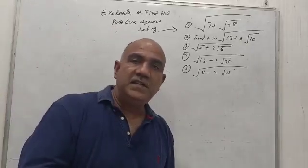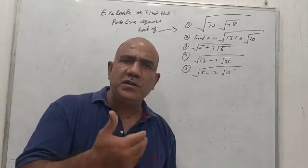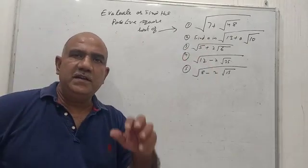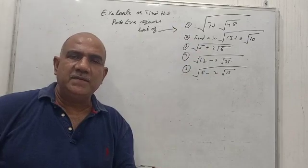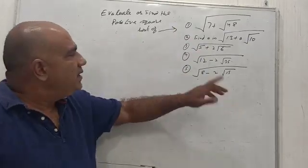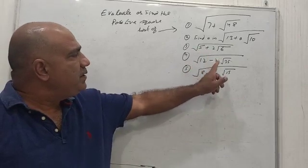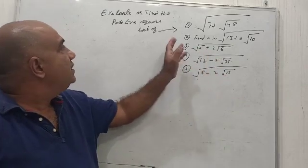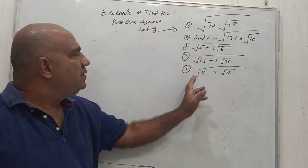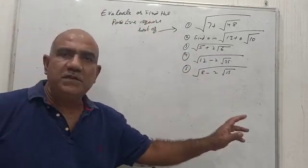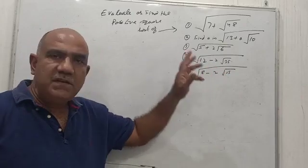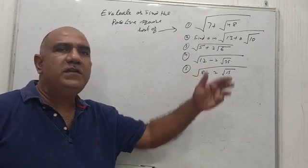Hello students. In this class we are going to see a very good type of question. There are five questions and they belong to the same type in number system for class 9 — this is a very frequently asked type. We need to find the positive square root, so what we will do is make the quantity under the square root into a perfect whole square of something.